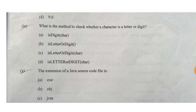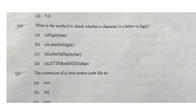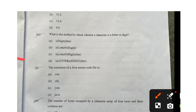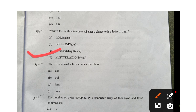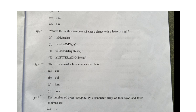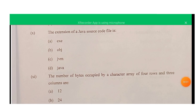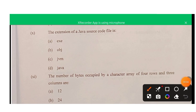Question nine: which method is used to check whether a character is a letter or digit? The correct answer is option C — isLetterOrDigit() — and the character argument has to be passed to check. Question ten: the extension of a Java source code file is '.java', so the correct answer is D.